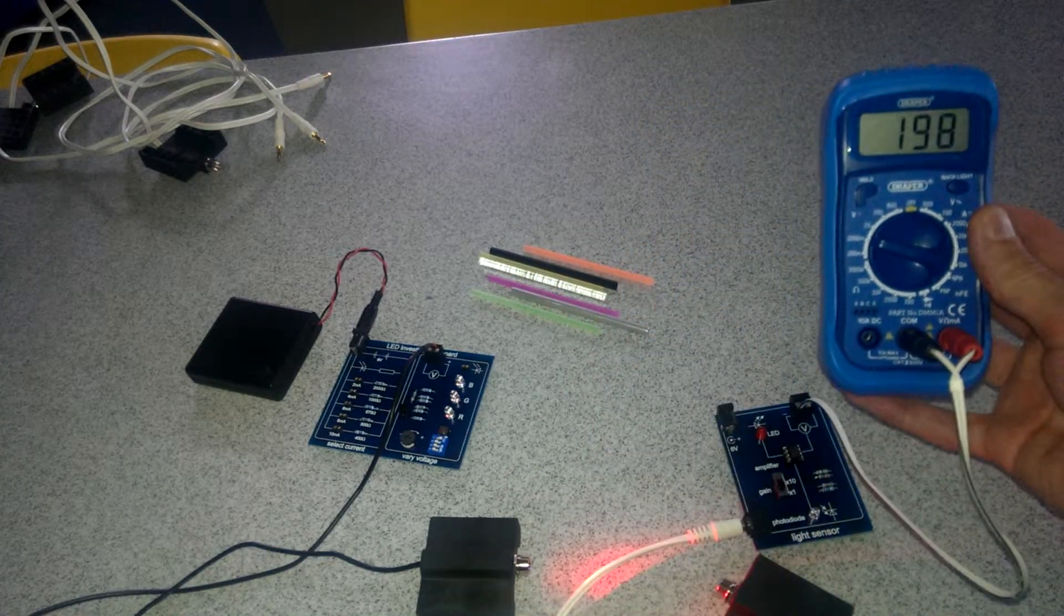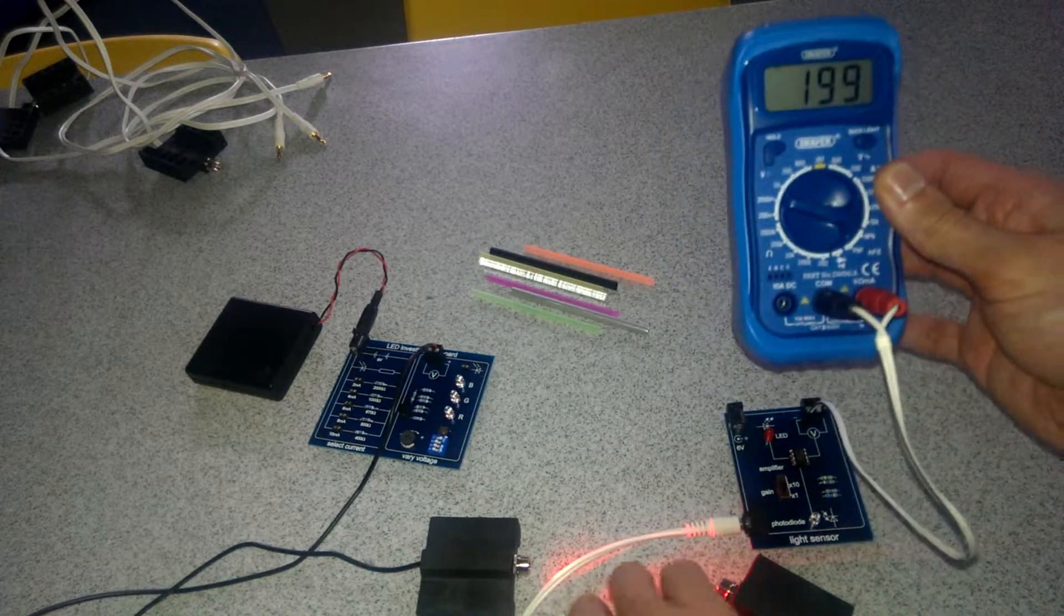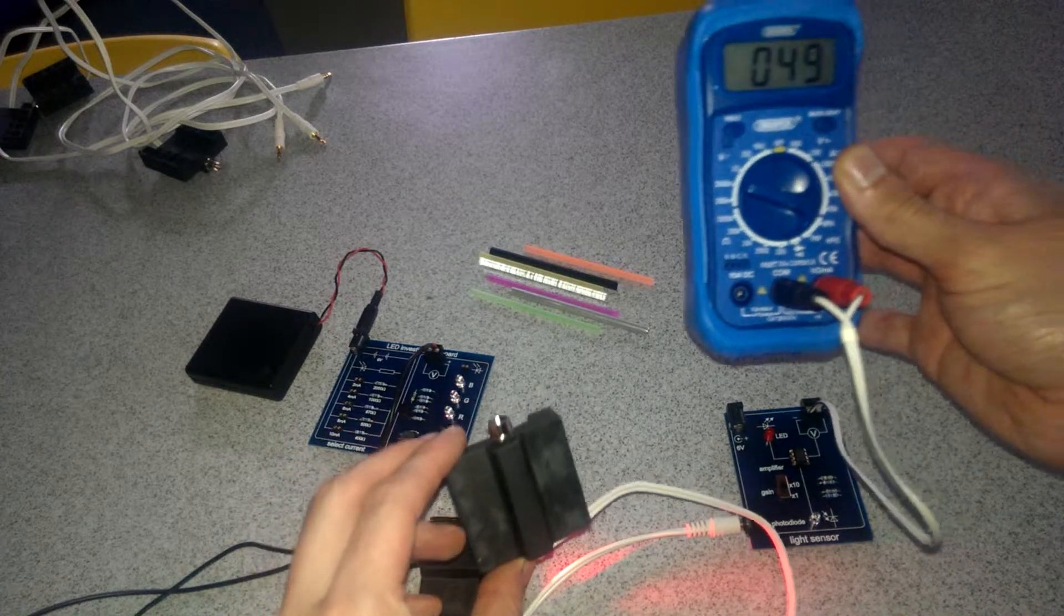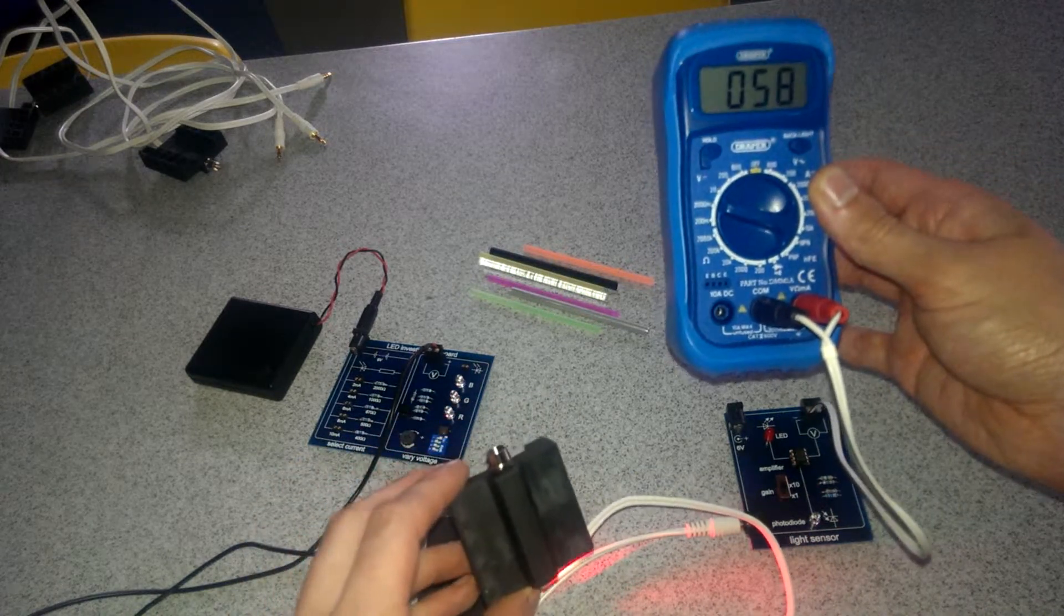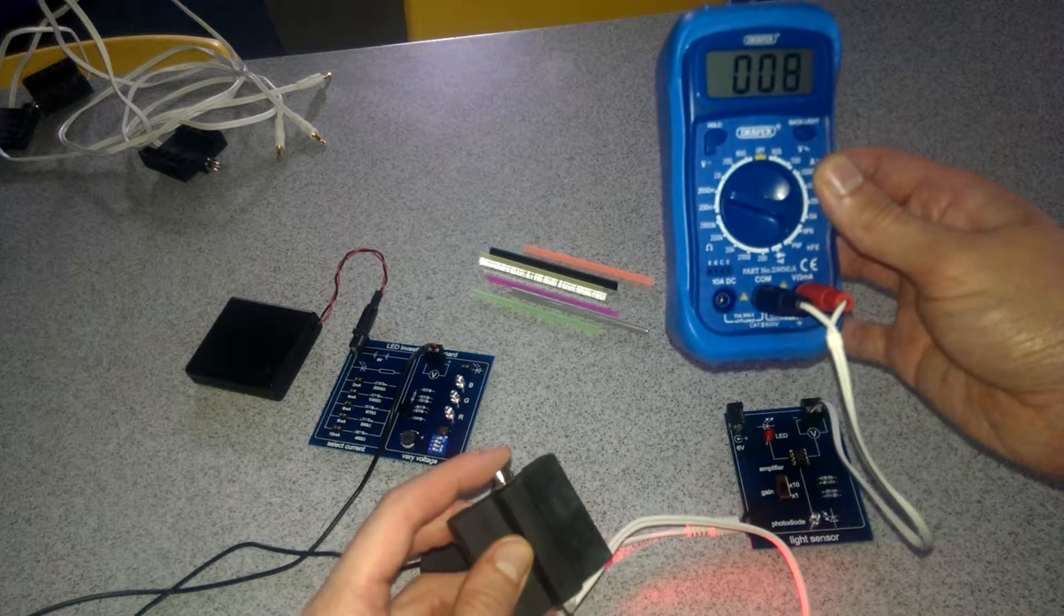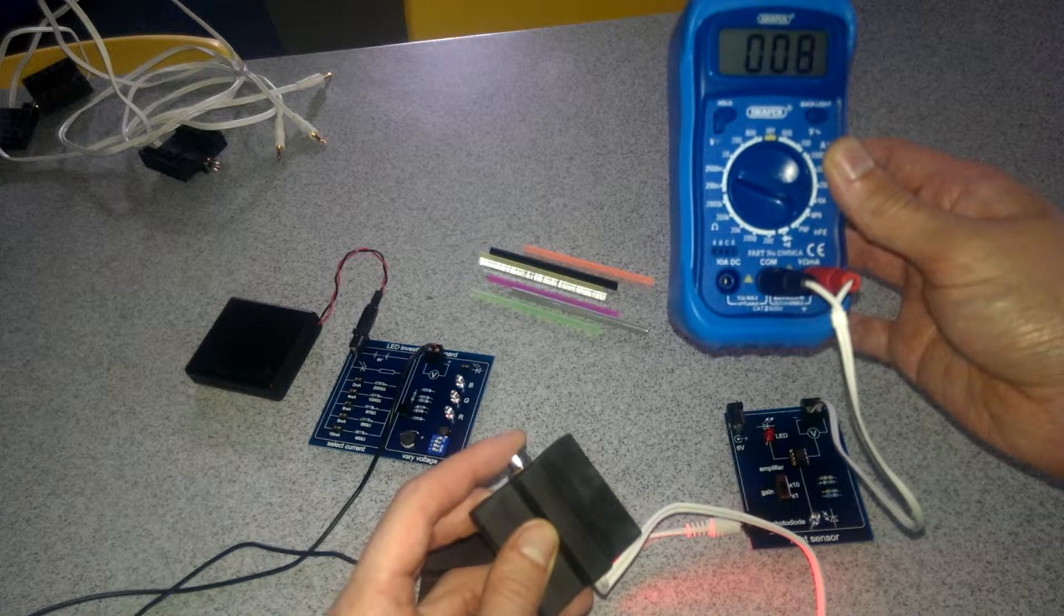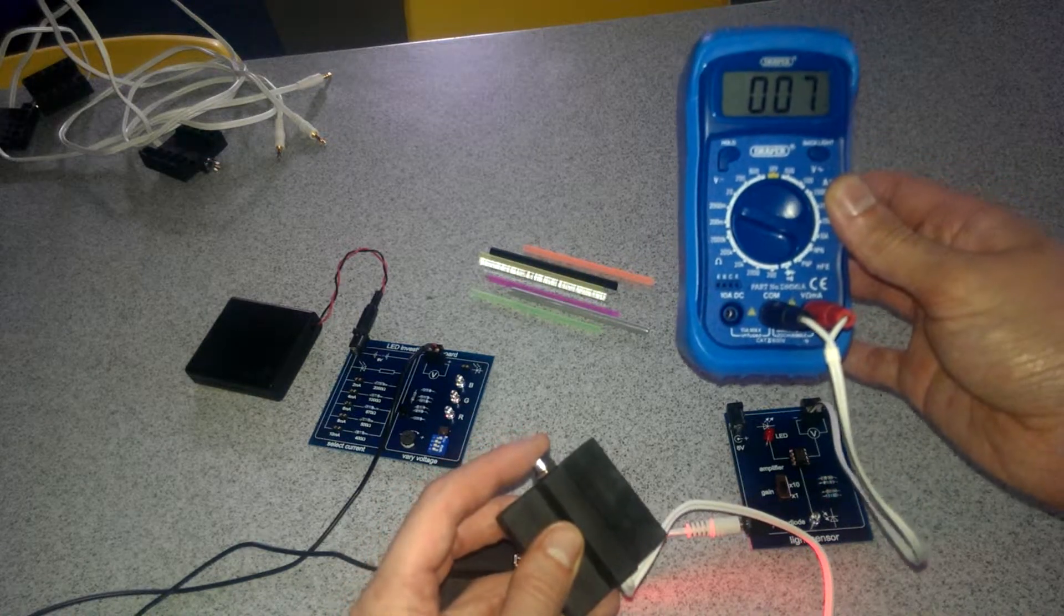So here we go, that is reading 198. Now this reading is actually coming from our light sensor here. Now you can see that as soon as I take it away from the light it goes down. If I cover this up it goes down to nearly zero. So in fact it's a reflection of how much light is getting into our sensor and that's what we're going to be investigating.